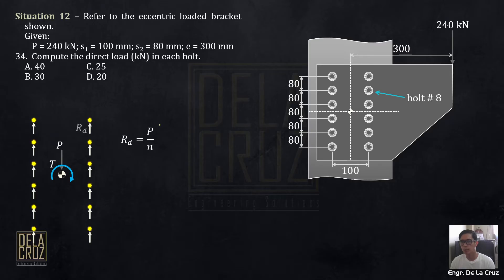So, for number 34, direct load is simply P over N. For P is 240, the N is the number of bolts. So, 6 here and 6. So, that's our direct load. 20 kilonewtons. That's how easy it is.